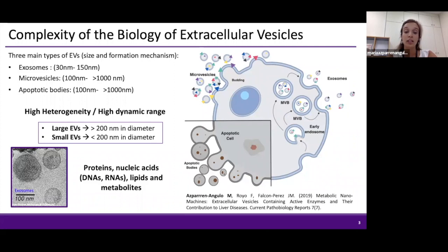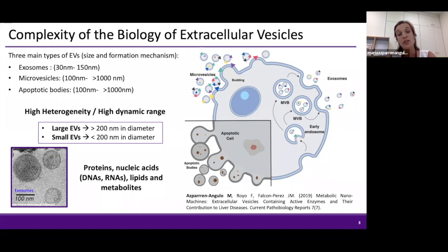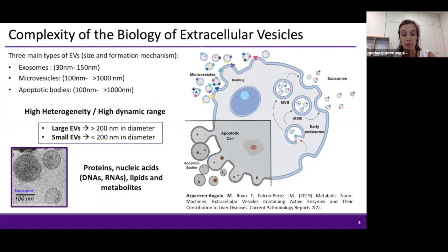As you all know, extracellular vesicles are circulating membrane-bound entities characterized by a specific cargo such as proteins, nucleic acids, lipids, and metabolites. They can be classified in three main groups depending on size and formation mechanisms. Due to the heterogeneity observed inside each group, a simpler classification has been proposed: large extracellular vesicles, bigger than 200 nanometers, and small extracellular vesicles, smaller than 200 nanometers. In this presentation, I will focus on small extracellular vesicles, including the exosomes.